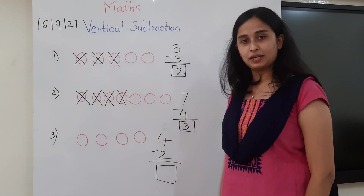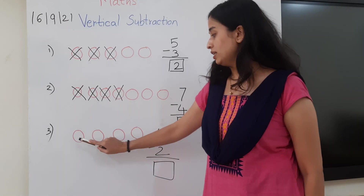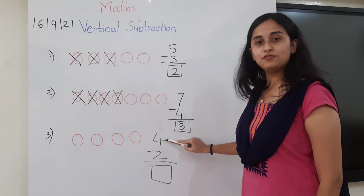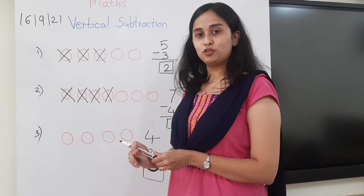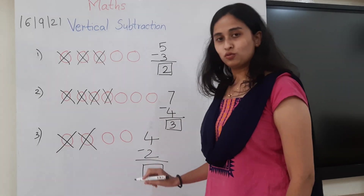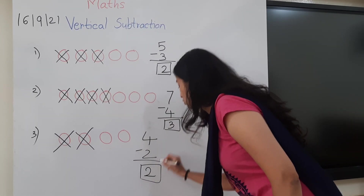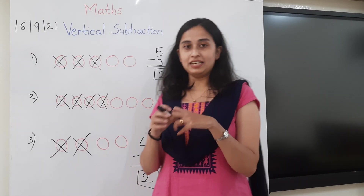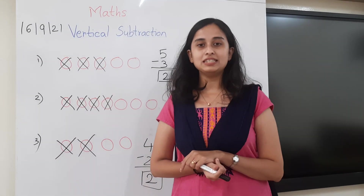Let us move on to the next sum. Now tell me, how many beads do you see here? Let us count again: 1, 2, 3, 4. There are 4 beads. So out of these 4 beads, we have to take away 2. So now let us take away 2 beads — we are just going to put a cross on them: 1 and 2. So now how many beads are left? 1 and 2. So the answer is 2. 4 minus 2 is 2. So taking away the beads, the number reduces — we are doing subtraction.